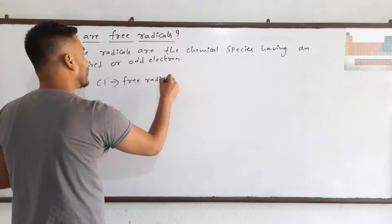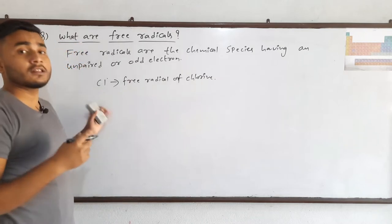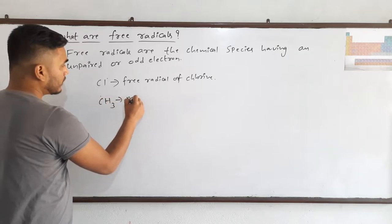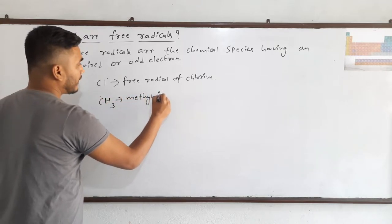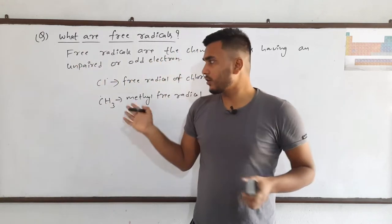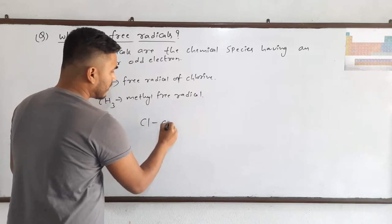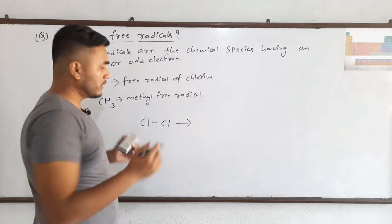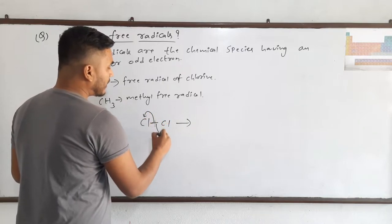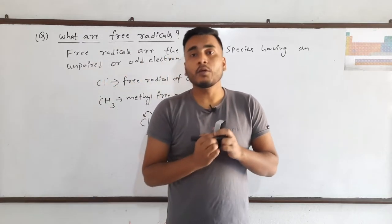The free radical of chlorine is a non-carbon free radical. At the same time, if we take the methyl free radical, this is a carbon-based free radical because the electron is on carbon. For example, with the chlorine molecule, if this bond is broken by some reaction, one electron will be taken by one chlorine and another by the other chlorine, and finally it will form two Cl dot by homolytic fission.